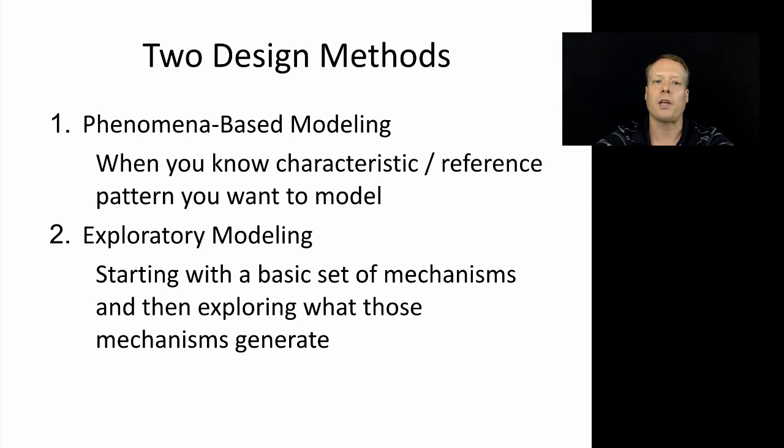In this framework, you know the basic characteristic or reference pattern that you want to model. So for instance, in the flocking model, you know that you want to get these flocks of birds. In a wolf sheep predation model, for instance, that Uri discussed in his lecture, you know you want to have these certain populations of wolf and sheep be constant throughout. In the Shelling model, the tipping model, there was this pattern of segregation that was rampant throughout society and you want to make sure you have that.